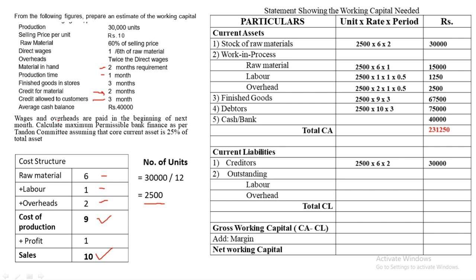Outstanding wages and overheads: since wages and overheads are paid at the beginning of next month, there is a time lag of 1 month. Outstanding Labor: 2,500 × 1 × 1 = ₹2,500 (no half rule here — half rule is only for WIP). Outstanding Overheads: 2,500 × 2 × 1 = ₹5,000. Total Current Liabilities = ₹37,500. Since no margin of safety is given, Working Capital = CA − CL = ₹2,31,250 − ₹37,500 = ₹1,93,750.